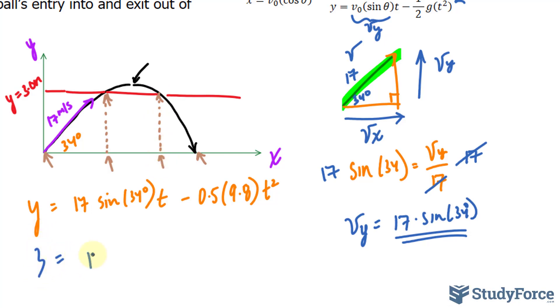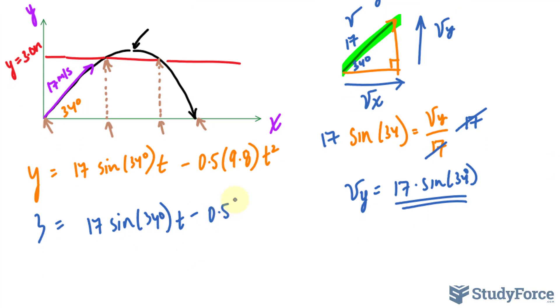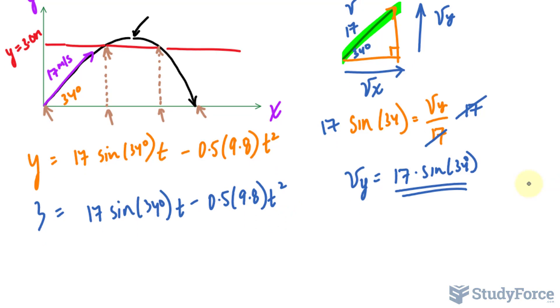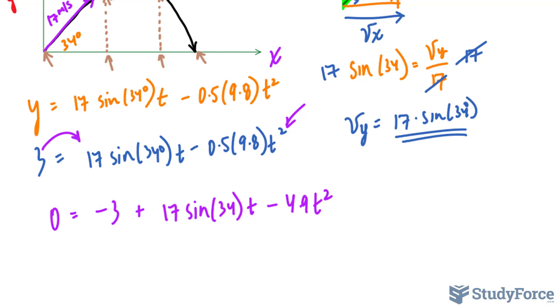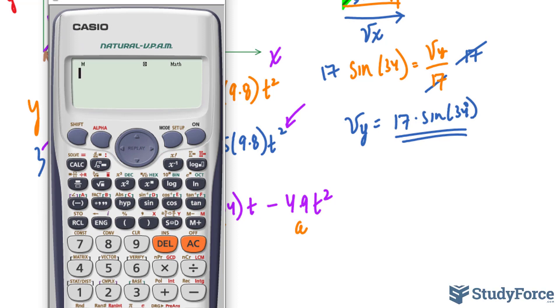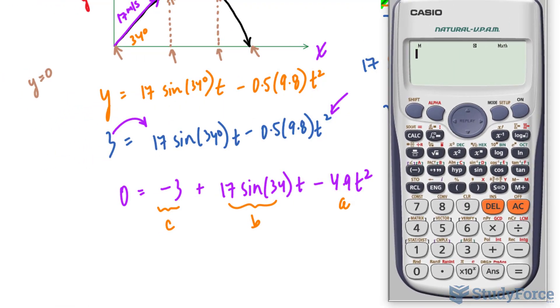Okay, so we will write down 3 is equal to 17 sine of 34 degrees times t minus 0.5, 9.8 t squared. And now let's go ahead and solve for t. This is a quadratic. Notice that we have a highest degree of t being of power of 2, so it's a quadratic by definition. I'll take this over and I have 0 is equal to negative 3 plus whatever that is, we'll find out soon, minus negative 0.5 times 9.8 is negative 4.9 t squared. And you can use the quadratic formula at this point where you set that as your a value, all of this as your b value and this as your c value. Although this is not a math question technically, it's a physics question, so we assume that you already know how to use the quadratic formula.